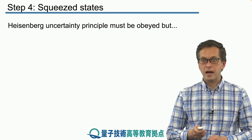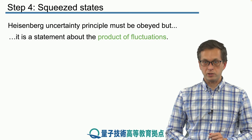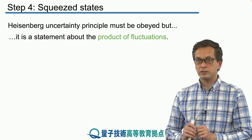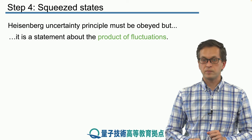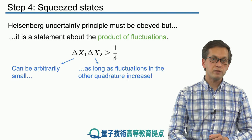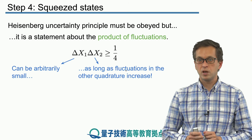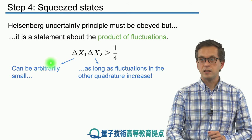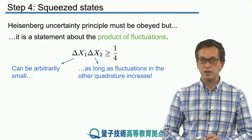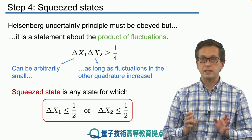The Heisenberg uncertainty principle is always obeyed — we cannot do anything about it. But it is a statement about the product of fluctuations. It doesn't say anything about the individual sizes of delta x1 and delta x2; only together must they satisfy the inequality. Furthermore, it doesn't say those fluctuations must be equal. So in principle, we can think of a state for which delta x1 is arbitrarily small, provided we increase delta x2 such that their product remains larger or equal to 1/4. Such states are known as squeezed states.